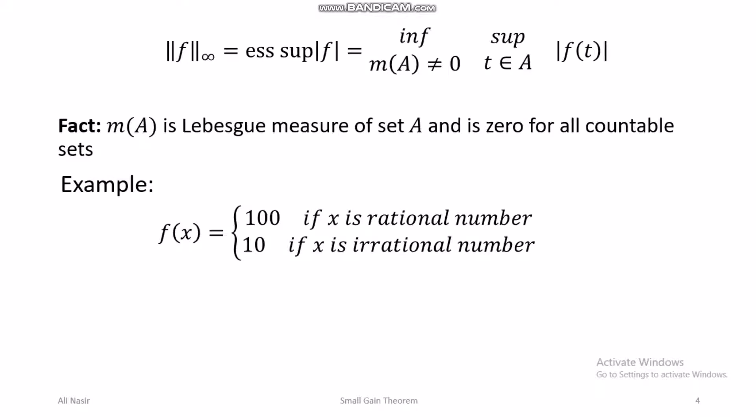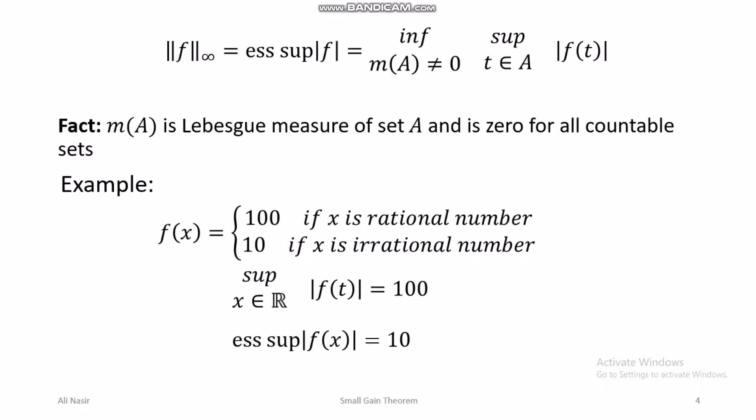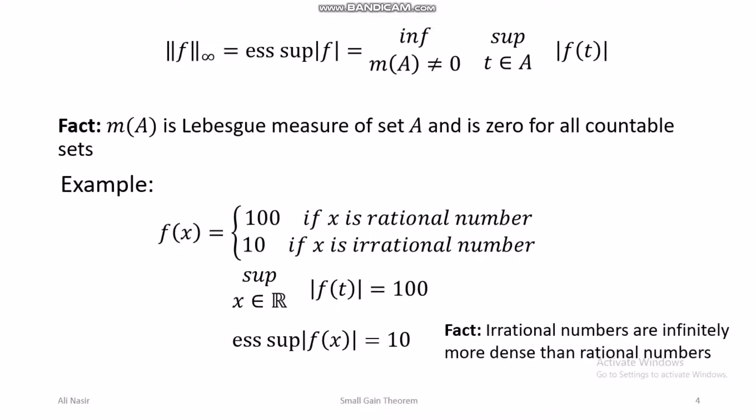Notice that the supremum of f(x) over all real x is 100, but the essential supremum is 10 — they are not equal. This is a good example illustrating that the supremum of a signal is not necessarily equal to its essential supremum. Also, irrational numbers are infinitely more dense than rational numbers.